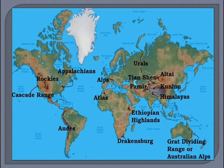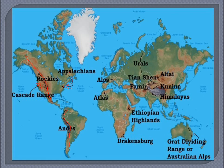Looking at some important mountain images: the Rockies run from Canada to New Mexico along the western side of North America. The Cascade Range and Appalachian Mountains are also in North America. The Andes run from north to south in South America and are one of the longest mountain ranges. The Alps are in southern Europe, and the Atlas Mountains are in northern Africa.